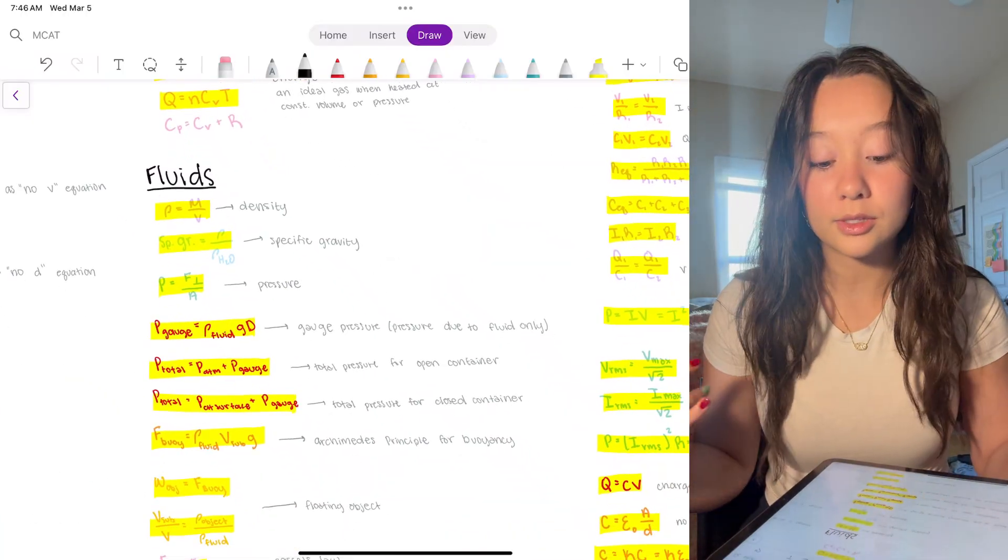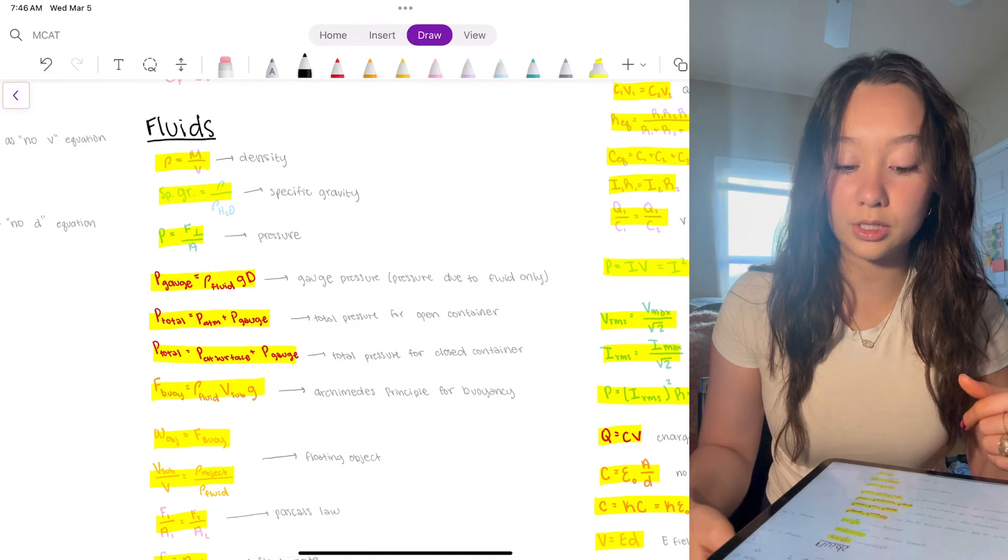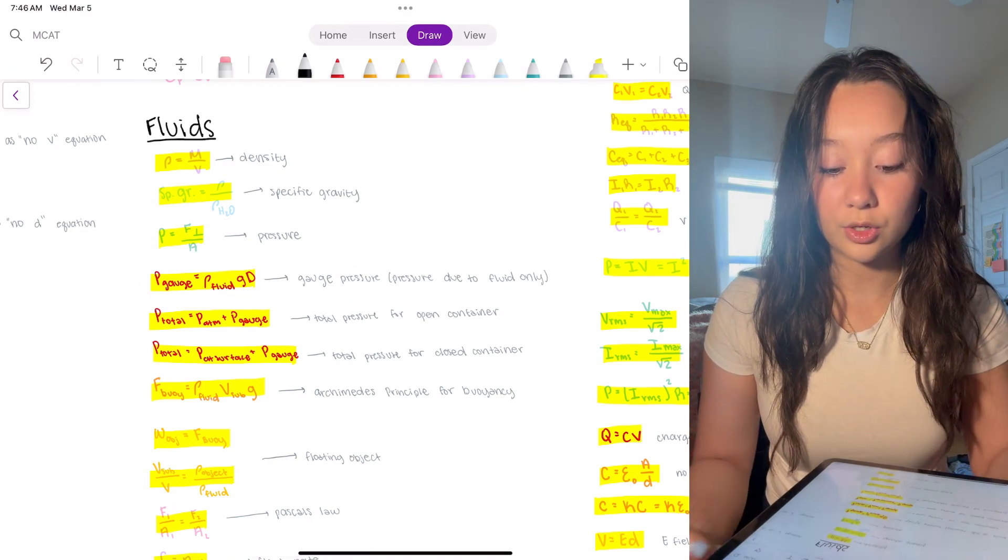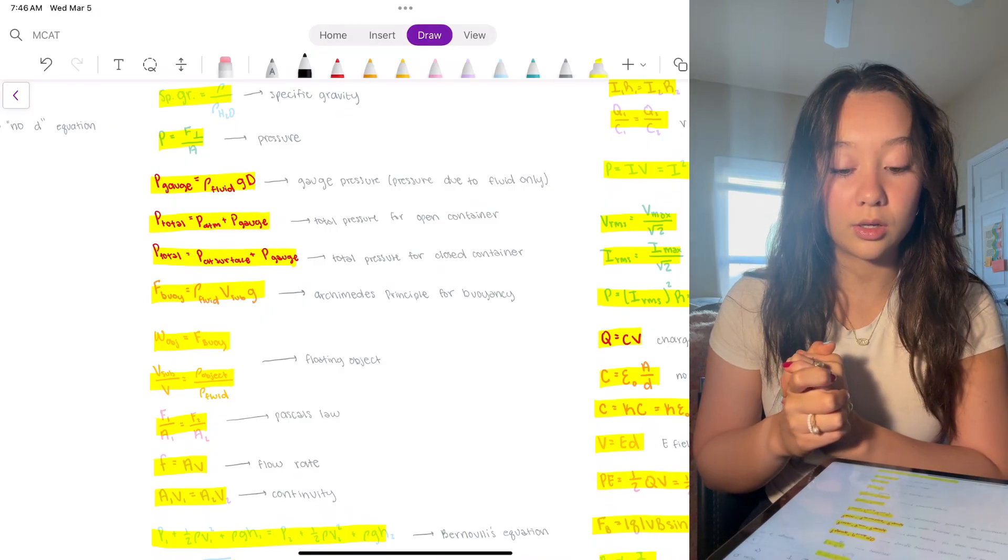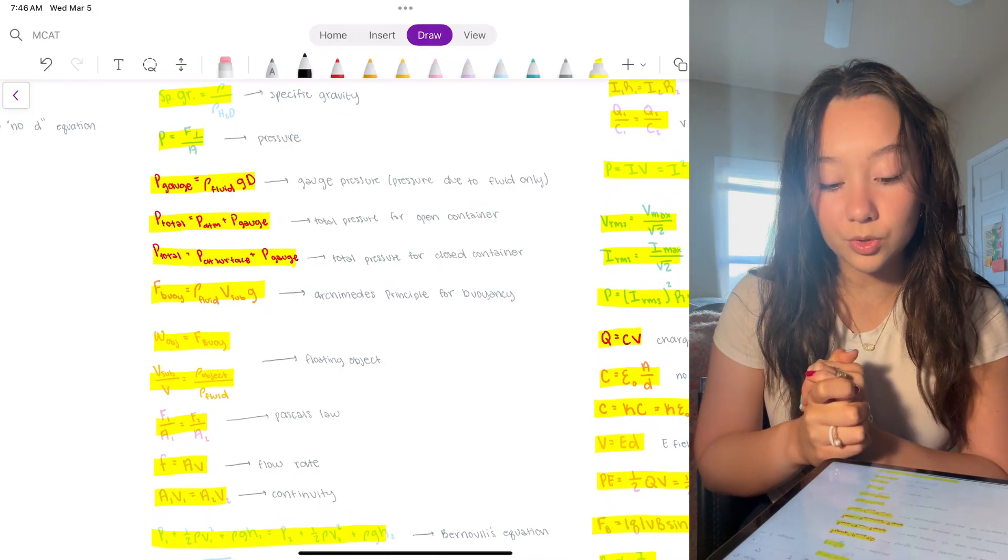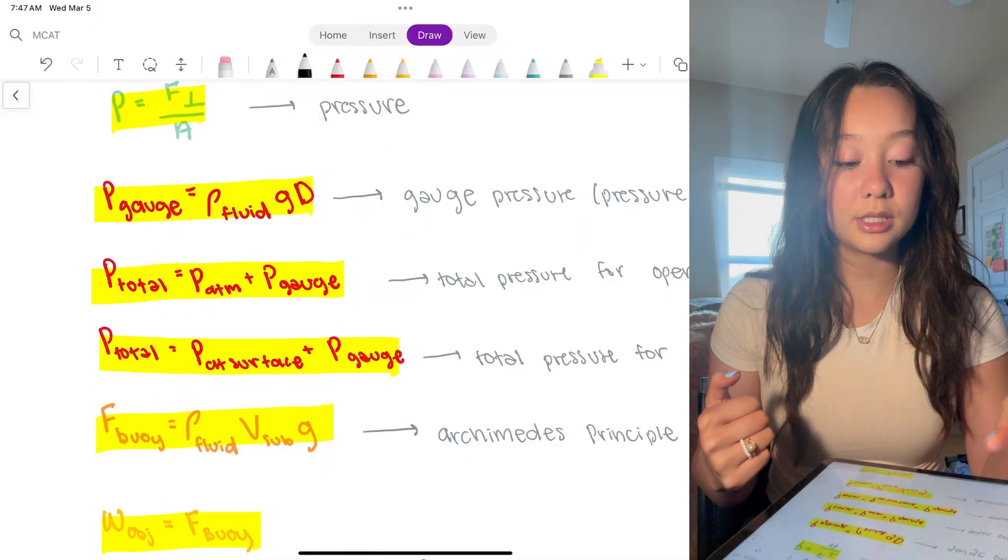Fluids, density obviously, mass over volume. Specific gravity is just the relationship of the density over the density of water. Pressure, force over area. Now all of these gauge pressures are kind of self-explanatory.